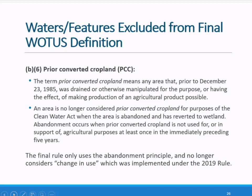The sixth exclusion is for prior converted croplands, which the agencies have excluded since 1993. For the first time, the agencies are defining in regulation the conditions under which prior converted croplands will no longer be excluded under the Clean Water Act. In the past, the agencies used two different approaches: either the land was abandoned or there was a change in use, and in both circumstances wetland characteristics had to return. In the final rule, the agencies are only using abandonment. PCC, which is determined by the USDA, is not considered abandoned if it is used for agricultural purposes at least once in the immediately preceding five years.